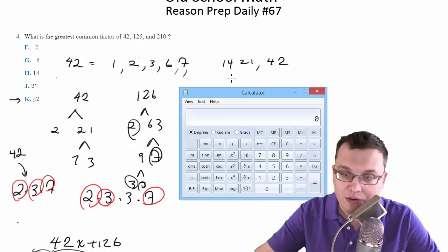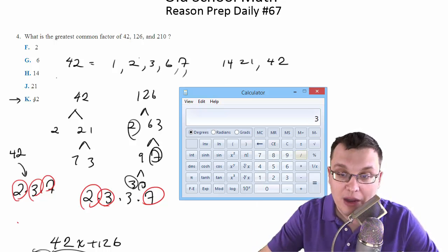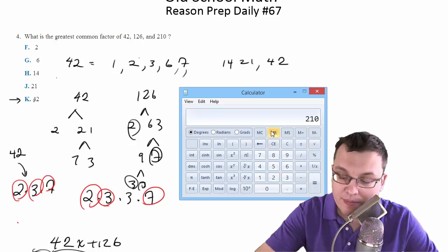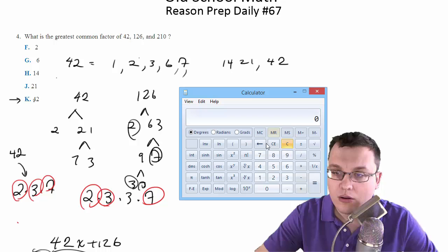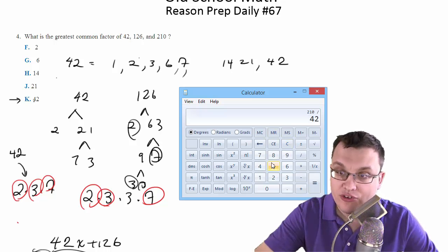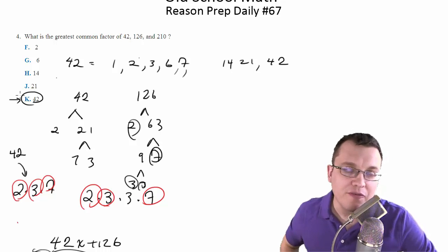So we know, of course, 42 is going to divide into 42. We'll divide 126 by 42. That works. We'll divide 210 by 42. So we'll divide 210 by 42. And that works as well. So right away, we're done. Definitely the fastest way to do it.